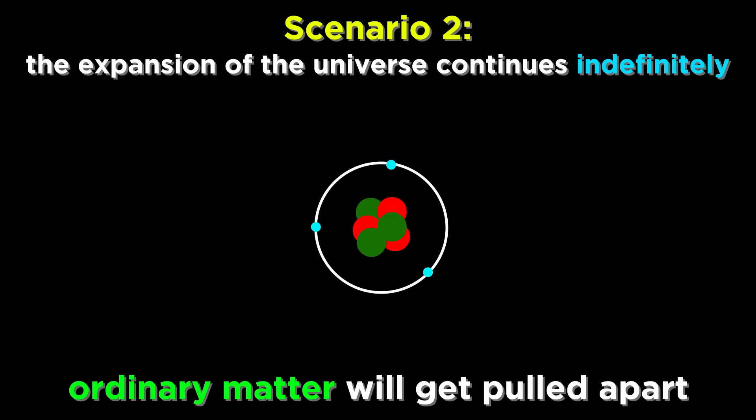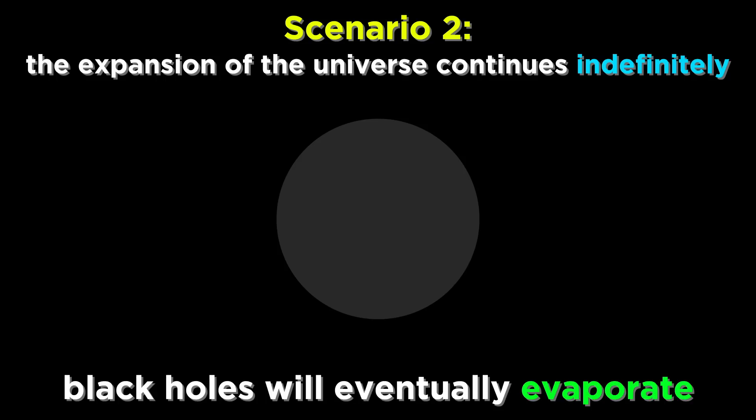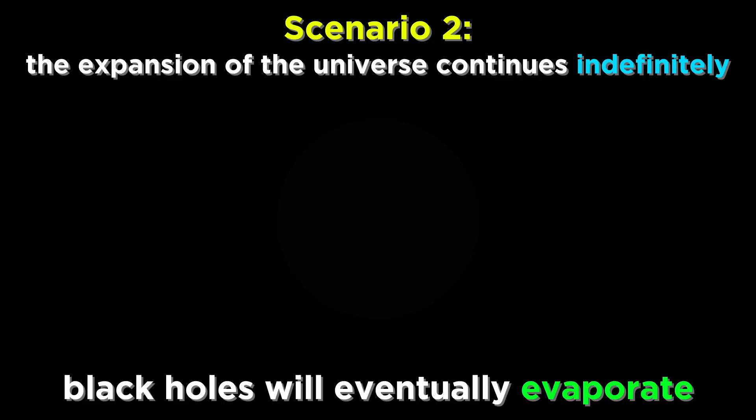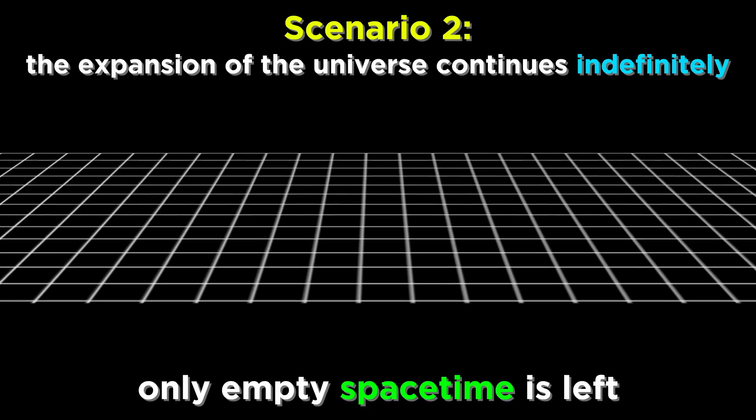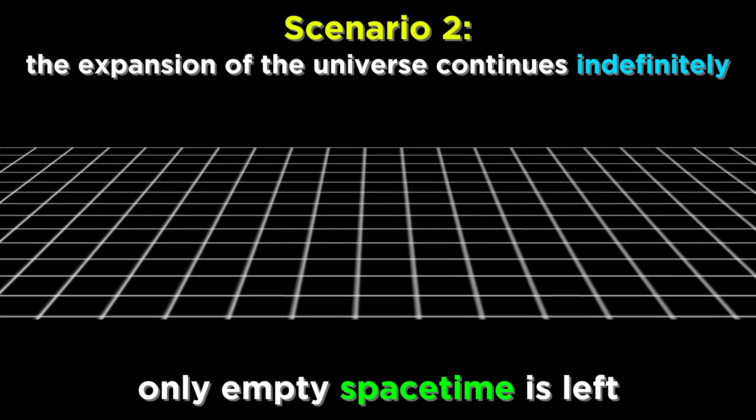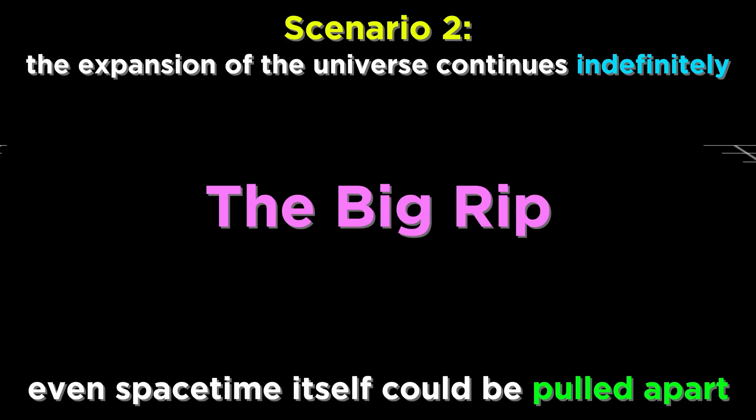And then, after trillions upon trillions of years, dark energy will be so strong that ordinary matter on the atomic level will be ripped apart, the electromagnetic and strong nuclear forces becoming too weak in comparison. On a long enough timescale, protons themselves will decay. Even all the black holes will eventually evaporate due to Hawking radiation. Every point in the universe will reach absolute zero or negligibly close to it. And that's the end. Nothing left but ever-expanding, empty spacetime, which even itself might be pulled apart, which we can call the big rip.